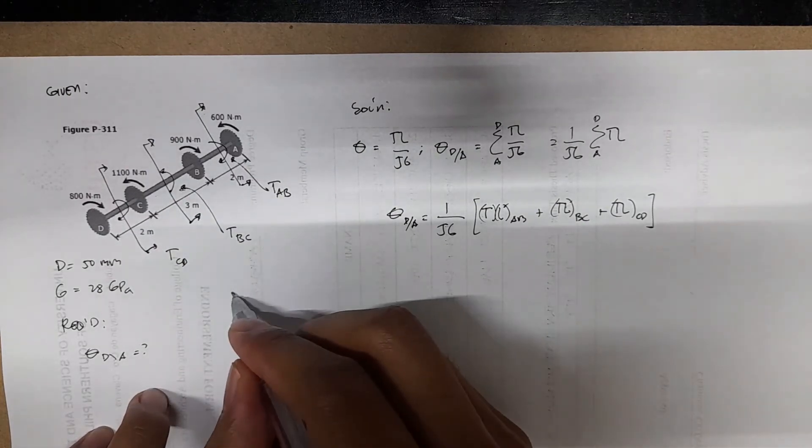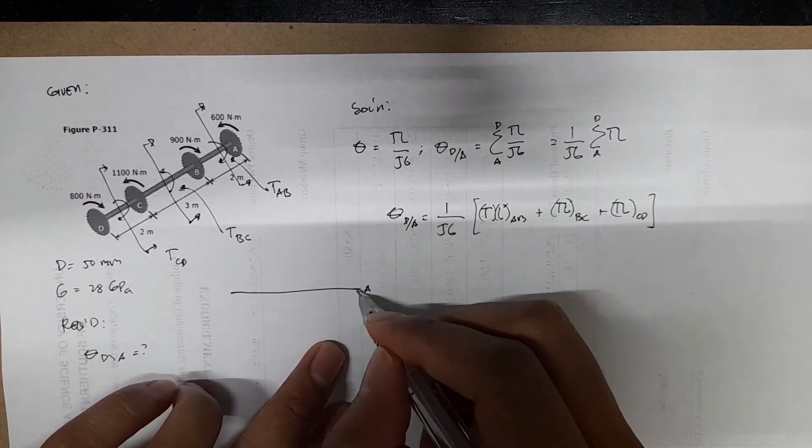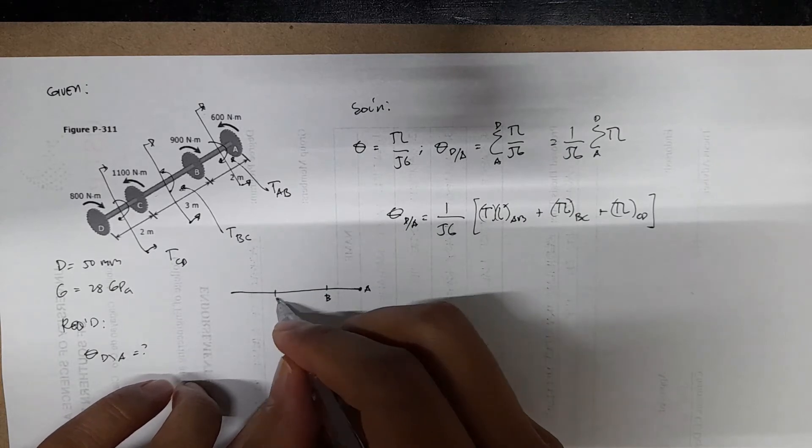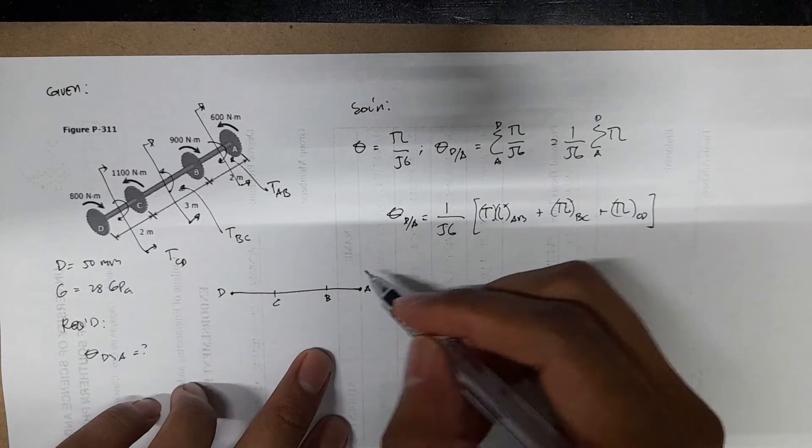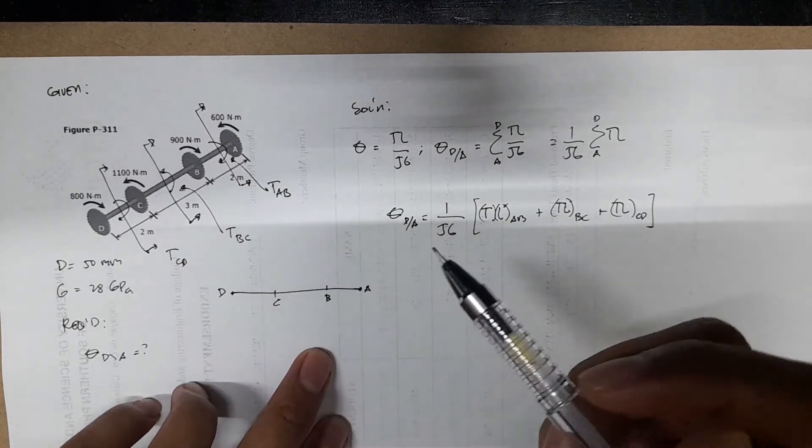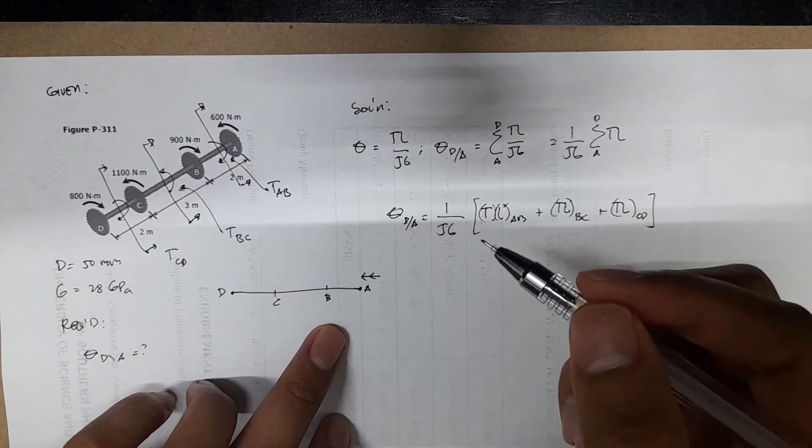You can have a straight line, and then this one is A, you have B, you'll have C, and then you have D. So at A, you will have a moment, which is denoted by two arrows, which is 600.